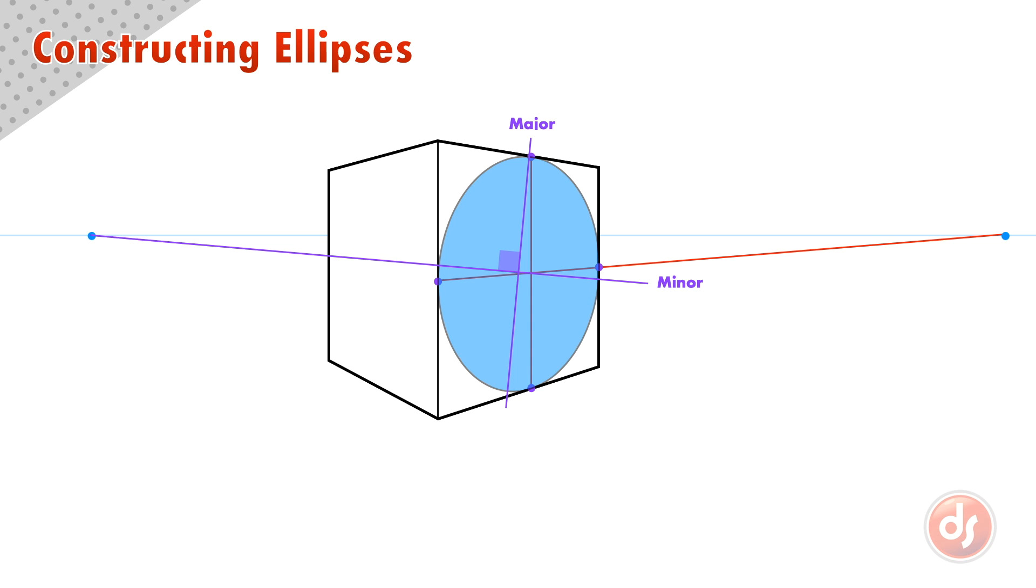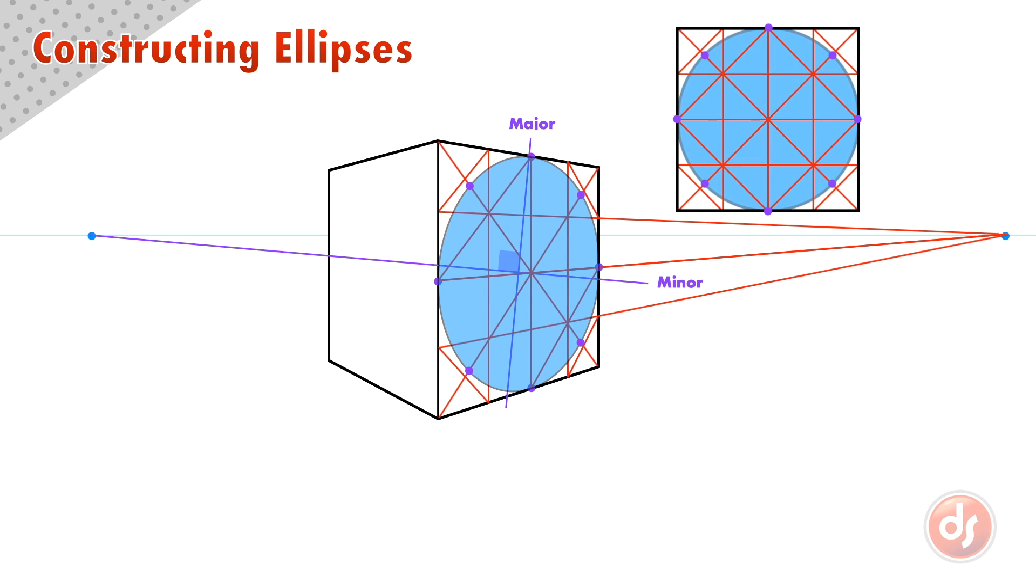However, there is one obvious problem with this construction method. We had to guesstimate this point, since it doesn't exactly touch the diagonal line, which leaves some margin for error. This is one of the faster techniques, and it is still a good way to construct an ellipse, but if we need a more accurate approach, we can use the next technique.